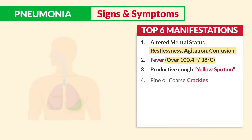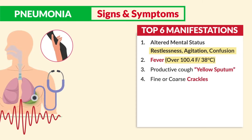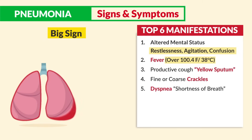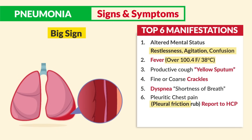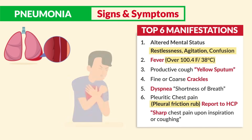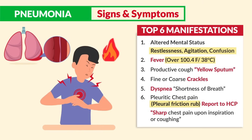Number four is fine or coarse crackles upon auscultation from fluid and mucus-filled lungs. Number five is dyspnea — that shortness of breath. The biggest sign that pneumonia is getting worse is pleuritic chest pain with pleural friction rub, which must be reported to the HCP. It's described as a sharp chest pain upon inspiration or coughing, sometimes described as stabbing or burning pain inside the chest that increases upon inspiration or with a cough.